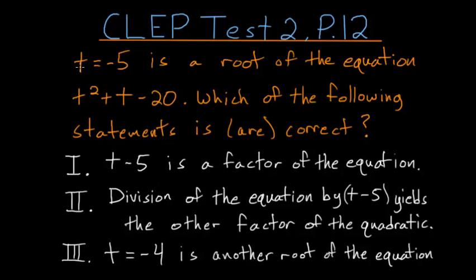And we know that t is equal to negative 5 is a root. And what this means is that if we set one side equal to 0, we know that t plus 5 is 0, so t plus 5 would be a factor of the equation. But this tells us nothing of t minus 5.